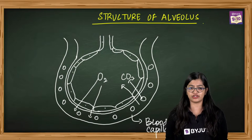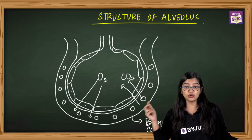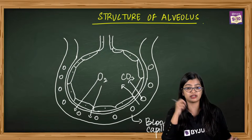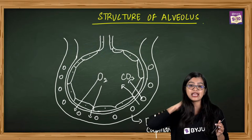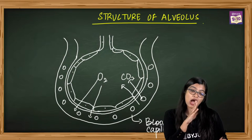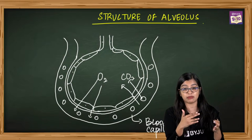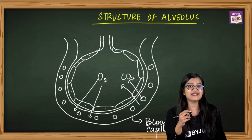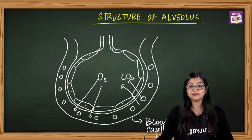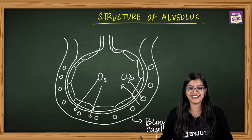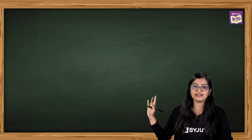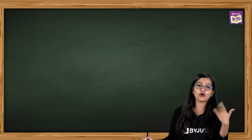Osmosis is the movement of water molecules from a region of higher concentration to lower concentration, but across a semi-permeable membrane. Now shall we do the excretory system first and then the heart diagram? The chances of the heart diagram coming are much lesser compared to the excretory system, so we will tackle excretory system and nephron structure first.